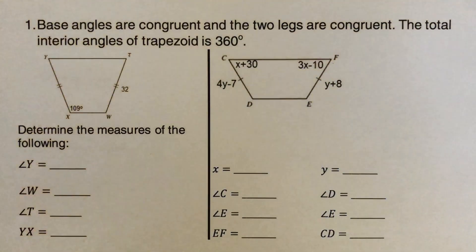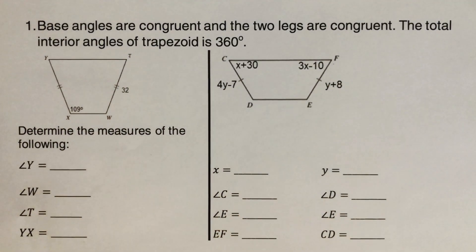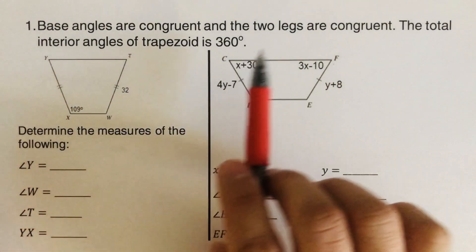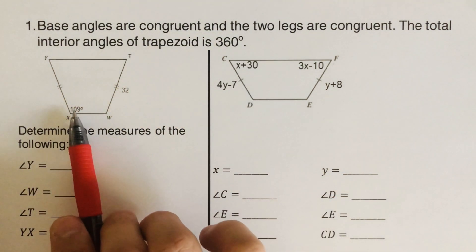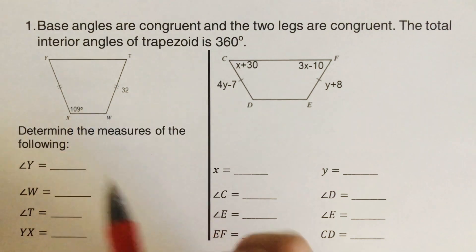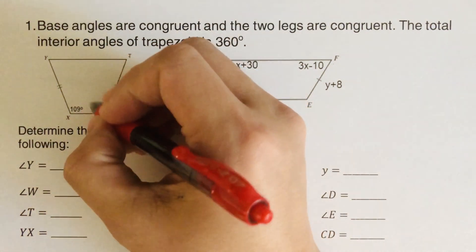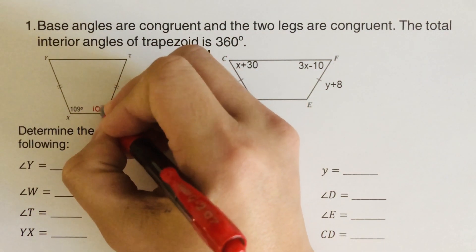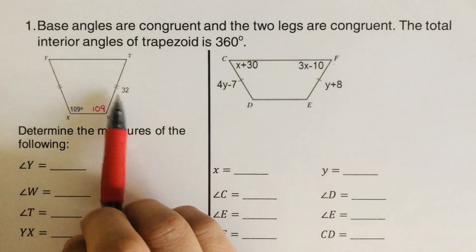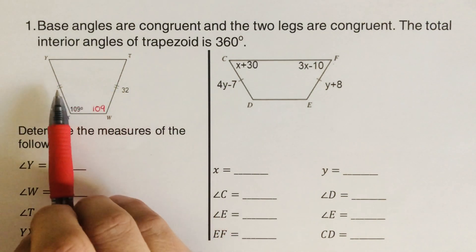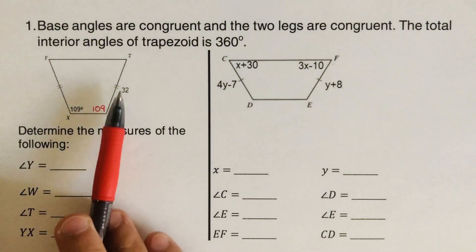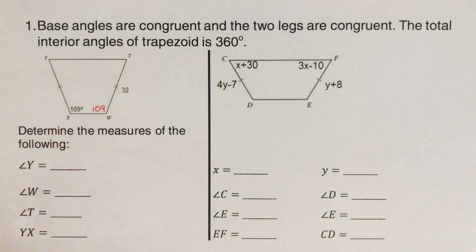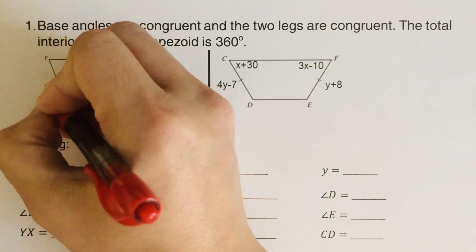So if we have an angle of 109 degrees, since base angles are congruent, the other base angle is also 109 degrees. And if one leg is 32, the other leg is also 32 because the two legs are congruent.